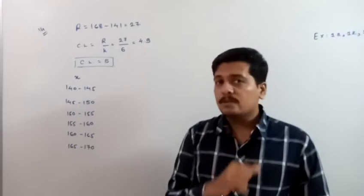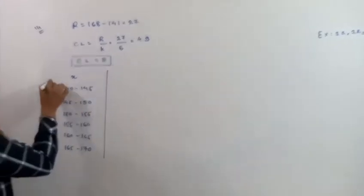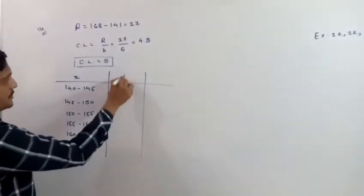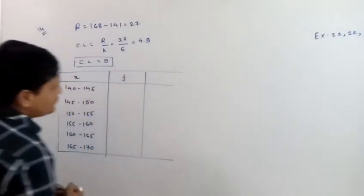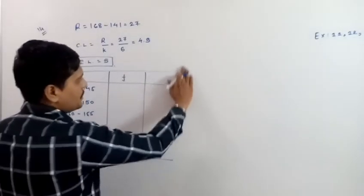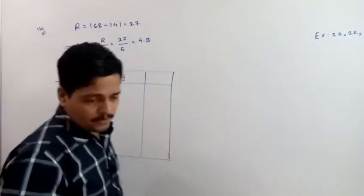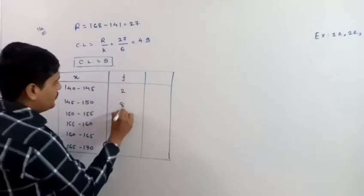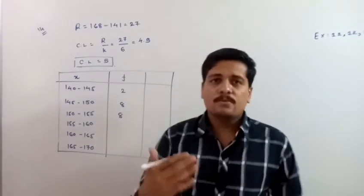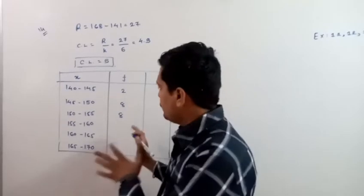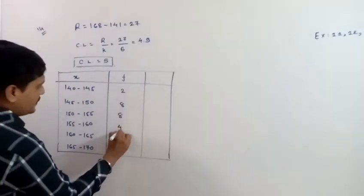Now the frequencies need to be counted against each class. I think you don't need me to repeat the counting process since we've already done several such numericals. So I'm directly writing the frequencies. Pause the video and count yourself. The frequencies are: 2, 4, 6, 8, 6, 4... coming out like this.